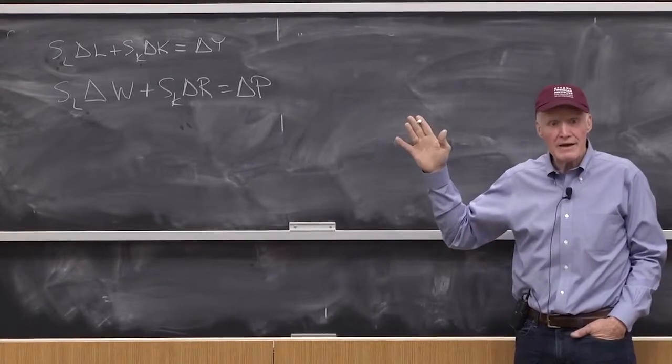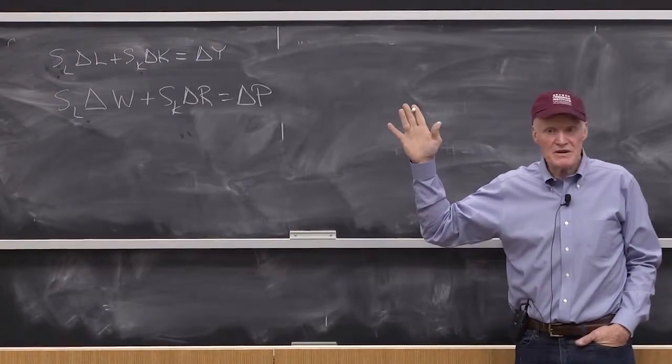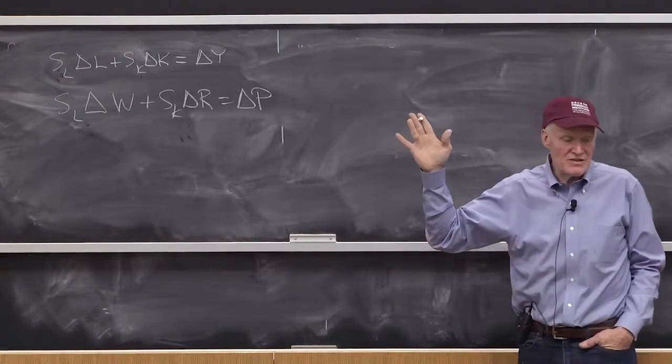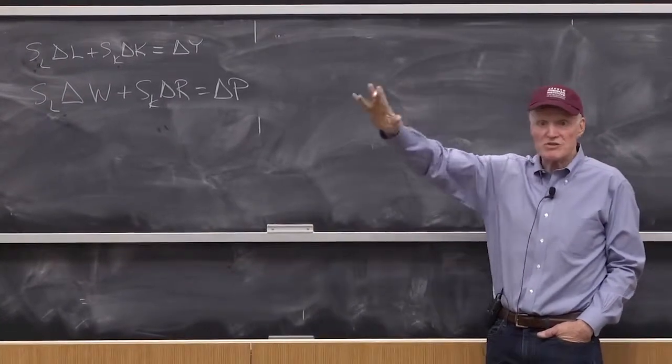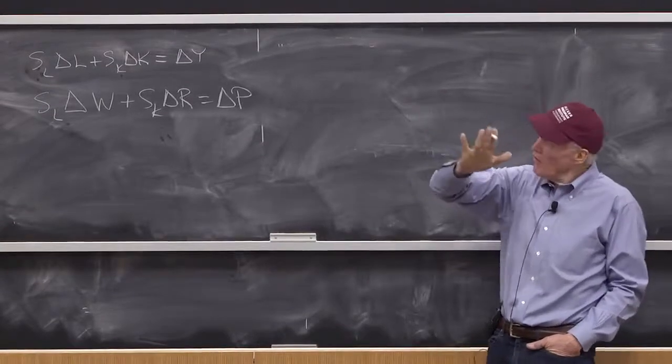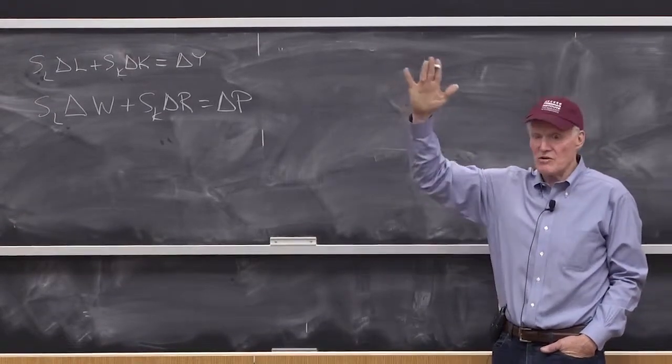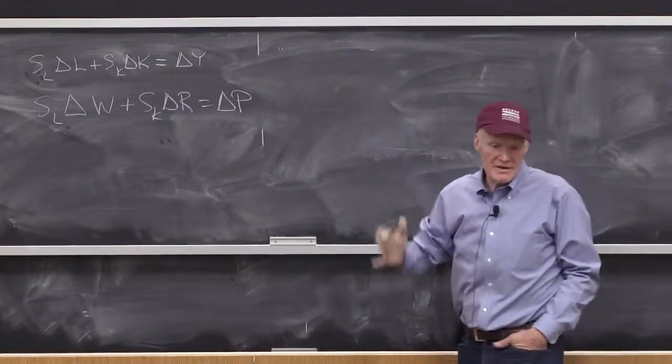Now, if you had homothetic, everybody knows what homothetic production means? What's the difference between constant returns to scale and homothetic? Basically, the answer is with homothetic, you still have all the same isoquants. They're just not numbered the same way. That is, the isoquants are still all radial blow-ups of one another. They just aren't necessarily proportional to how far you are from the origin. That's the big difference with homothetic.